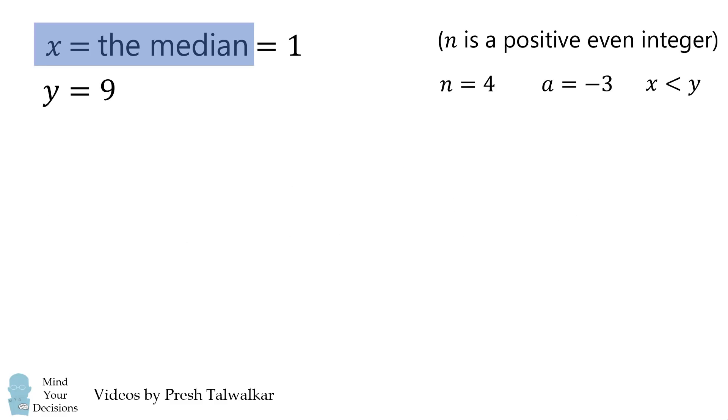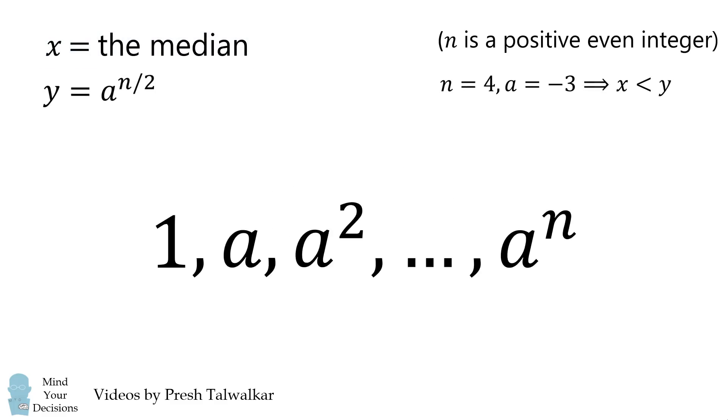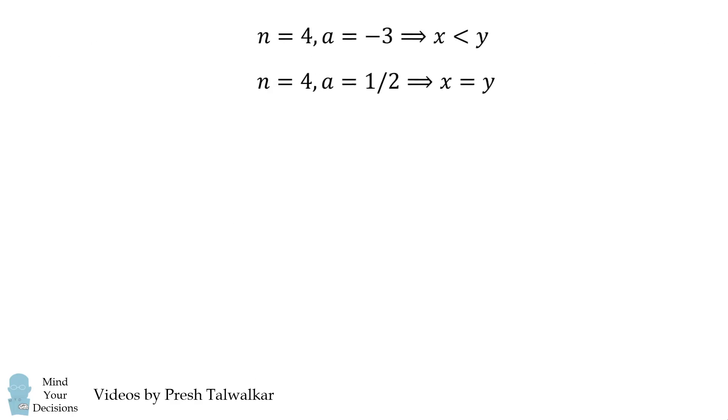So, we'll put this particular case together with the other case that x was equal to y for a positive value of a. Putting these observations together, we can solve the question.